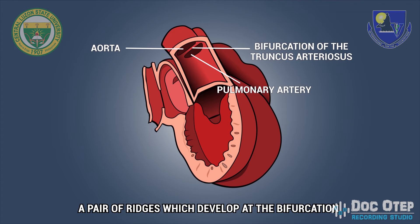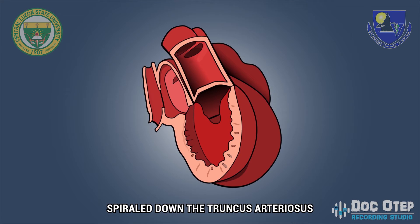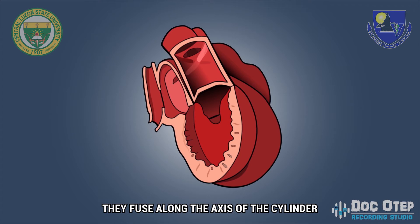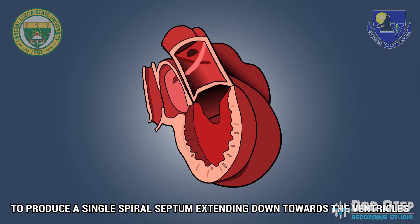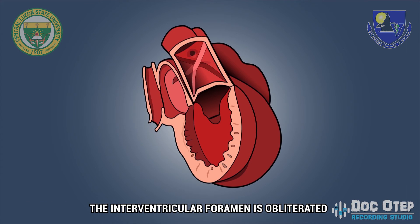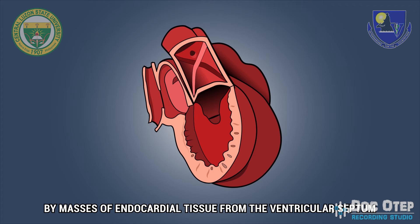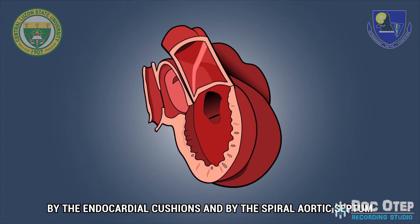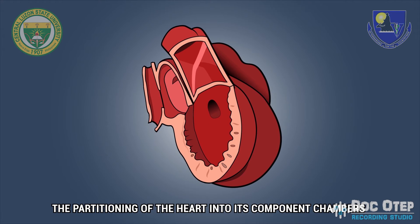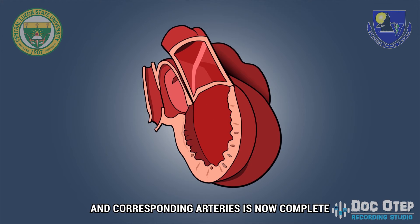A pair of ridges which develop at the bifurcation spiral down the truncus arteriosus. They fuse along the axis of the cylinder to produce a single spiral septum extending down towards the ventricles. The interventricular foramen is obliterated by masses of endocardial tissue from the ventricular septum, from the endocardial cushions, and by the spiral aortic septum. The partitioning of the heart into its component chambers and corresponding arteries is now complete.